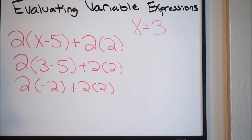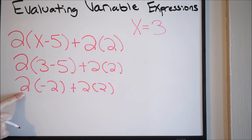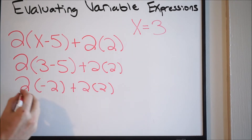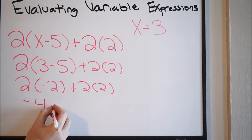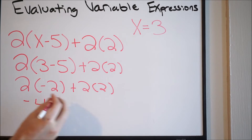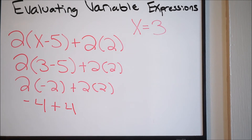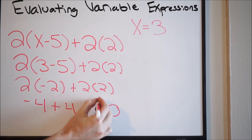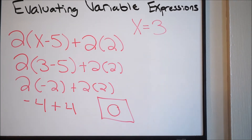Now I can just simply work left to right, because I have multiplication here and here. So 2 times negative 2 is going to give me negative 4, plus 2 times 2, which is going to give you 4. So negative 4 and positive 4 — that's simply going to give you 0. So 0 is going to be our final value here.